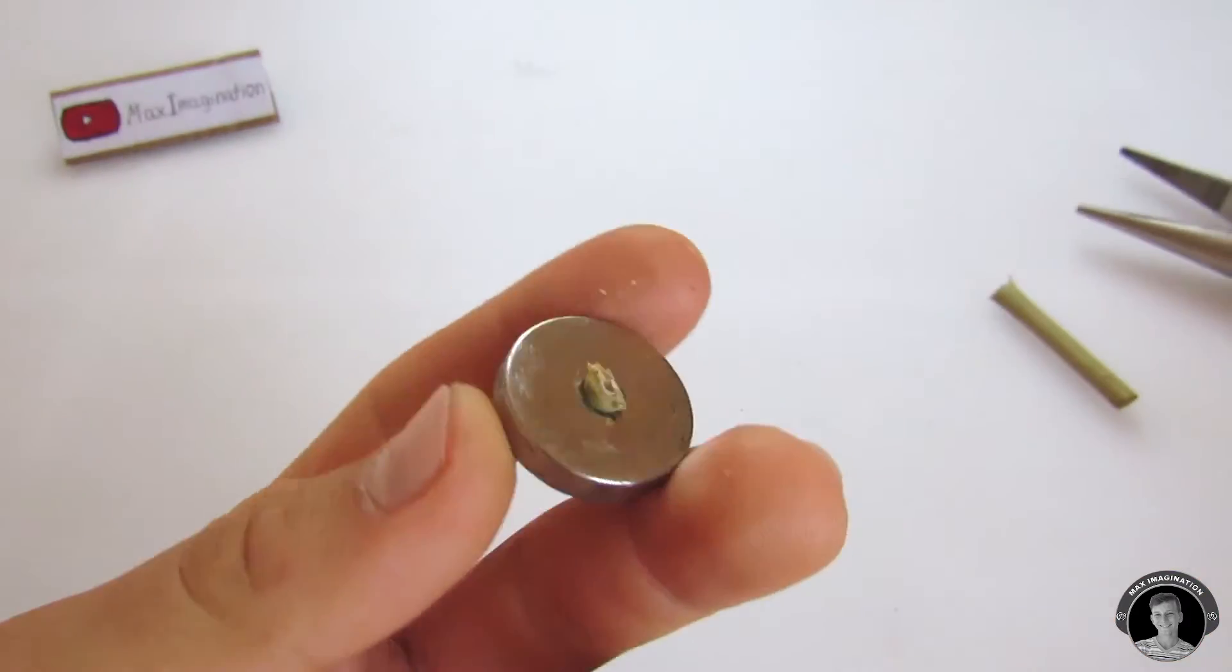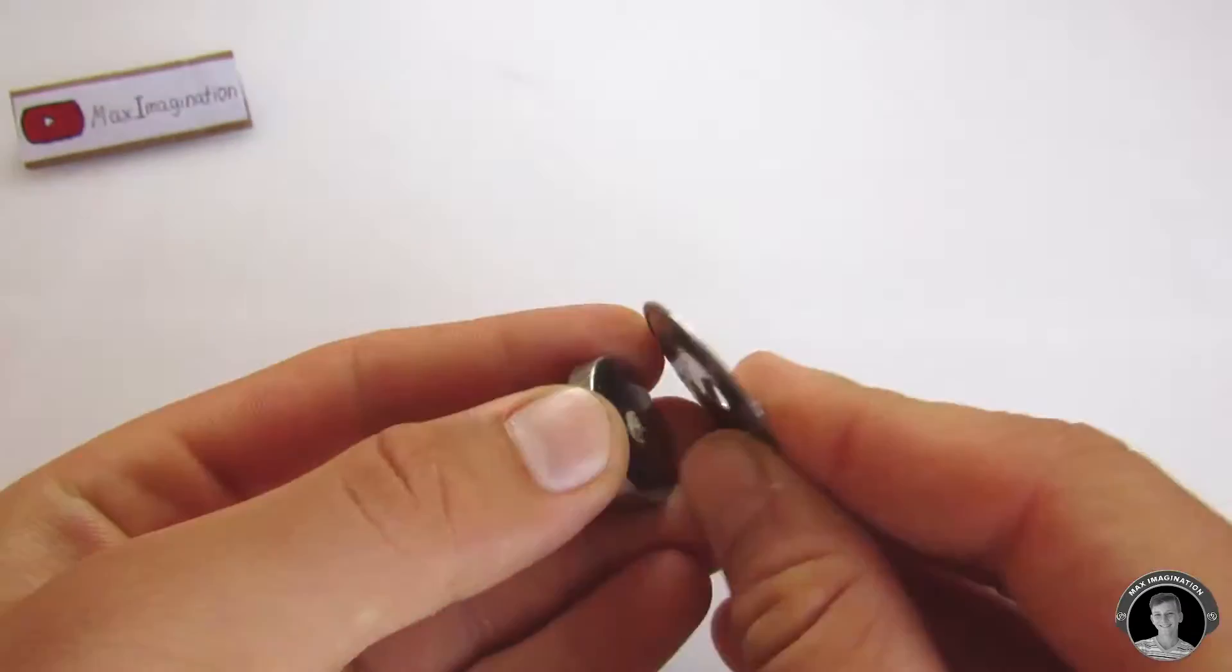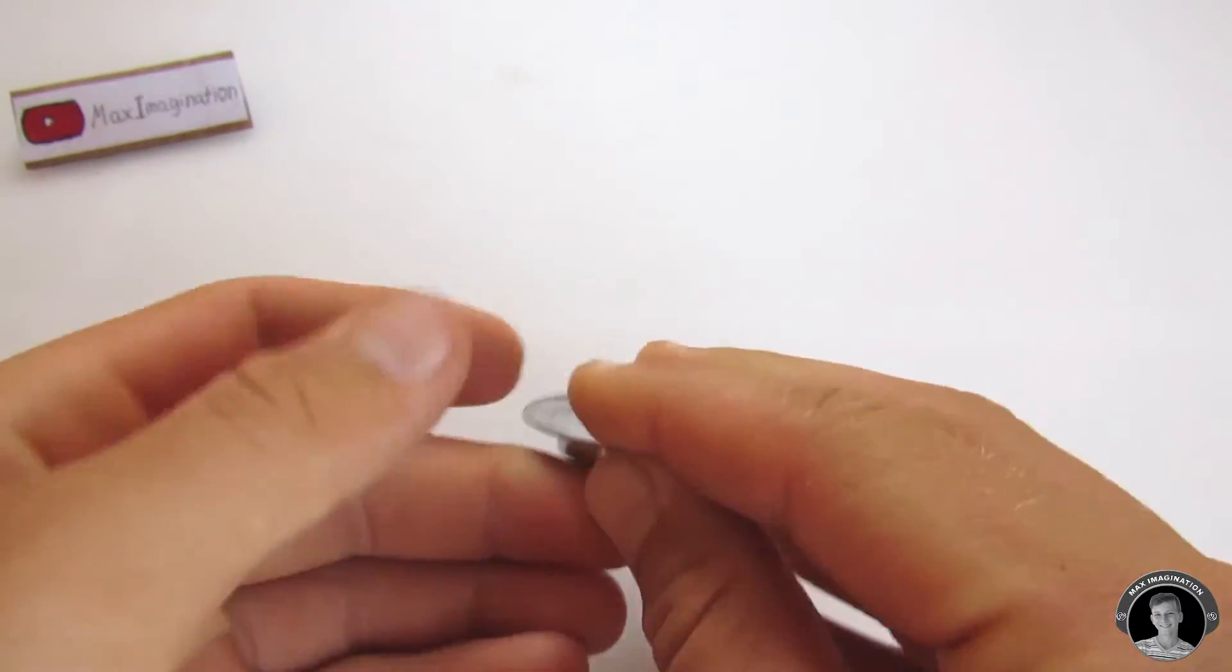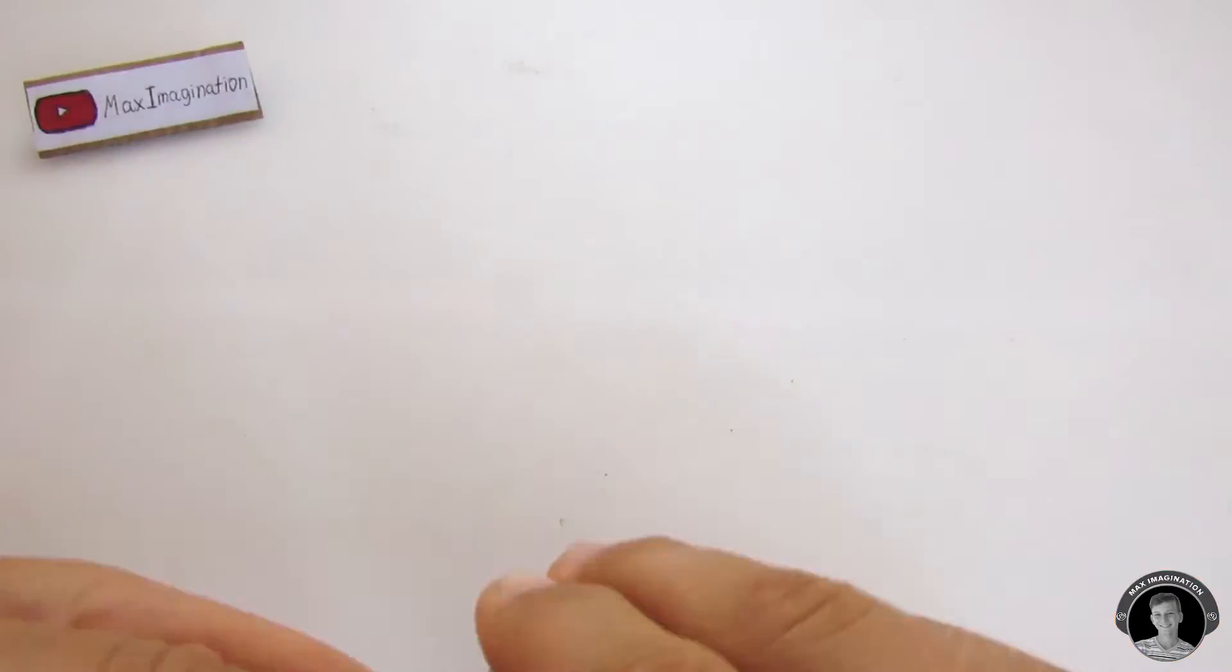I cut the bamboo stick just above the magnet and filed it flush. On top of the magnet, I stuck on one of those metallic discs from a tambourine.